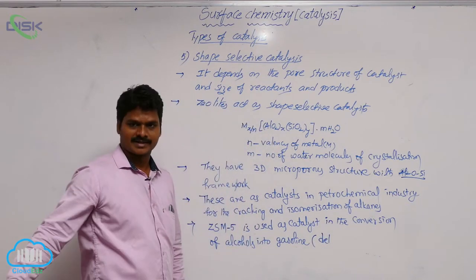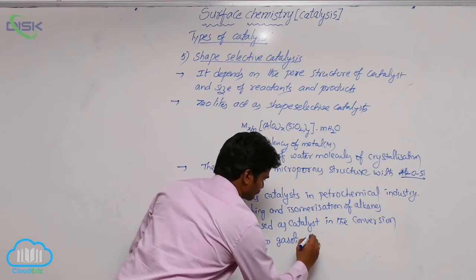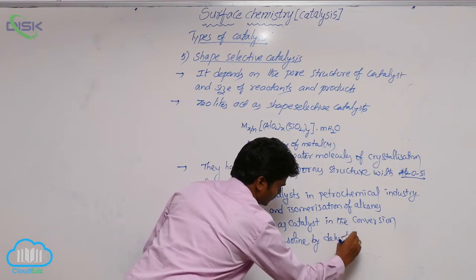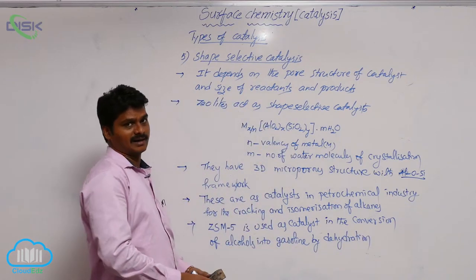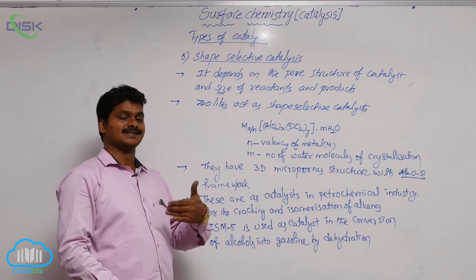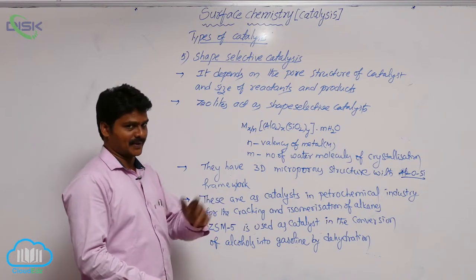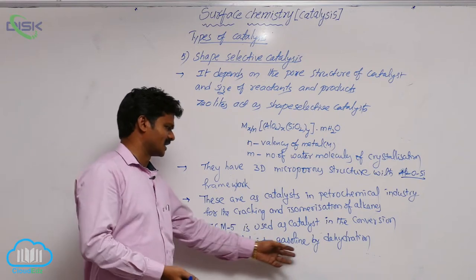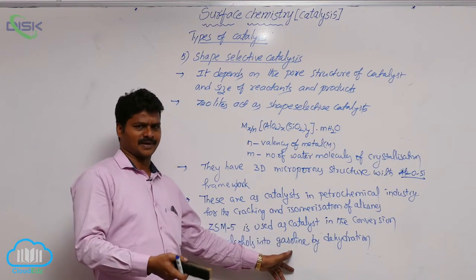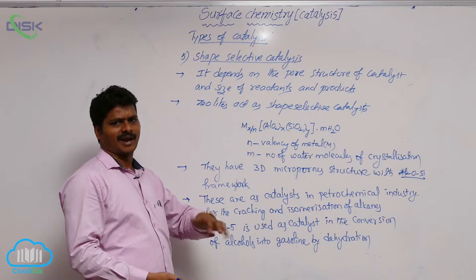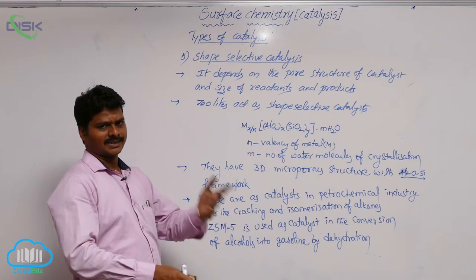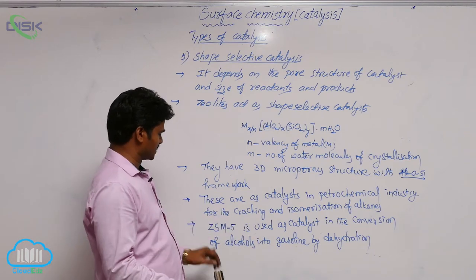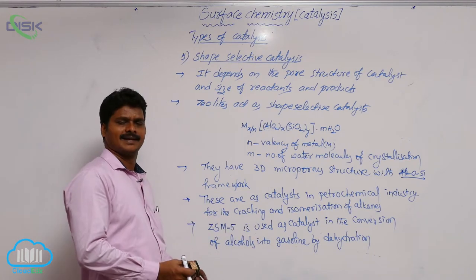This conversion takes place by dehydration. Dehydration means removal of water. From alcohol, when oxygen is removed as water, hydrocarbons are formed. Synthetic petrol is a mixture of several hydrocarbons obtained from alcohols by dehydration. In that process, ZSM-5 is used as the catalyst.